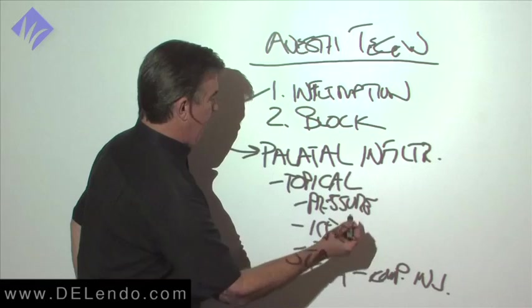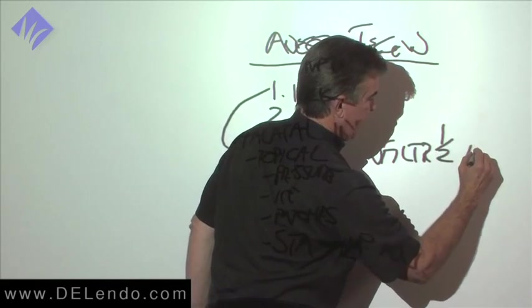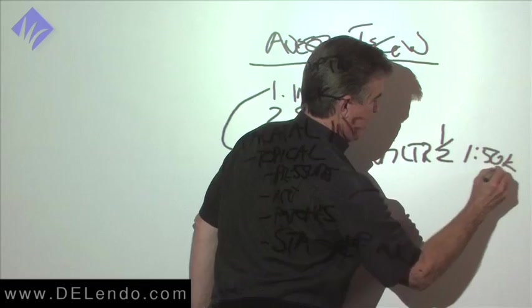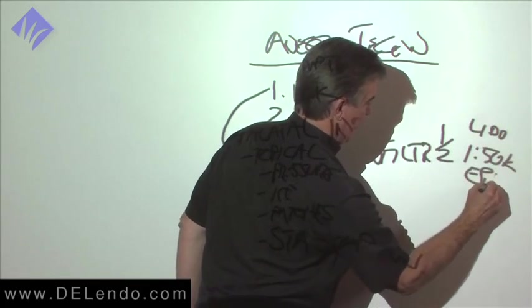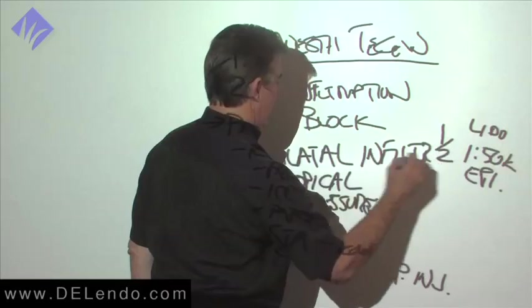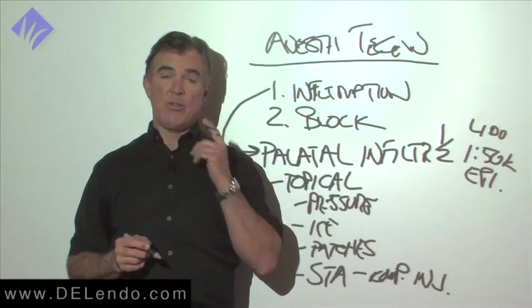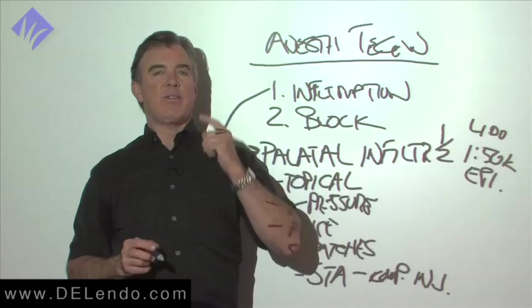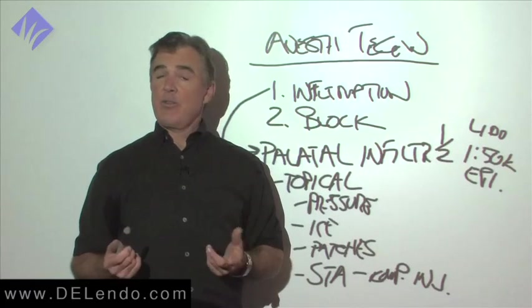About a half carpule, this is going to be a half carpule of 1 to 50,000. This is Lido, 1 to 50 epi. Half carpule right there, I'm going to give the other half carpule on the buccal side of the same tooth, I'll add one more carpule of lidocaine on the buccal infiltration side, and that's going to do it for upper molars.